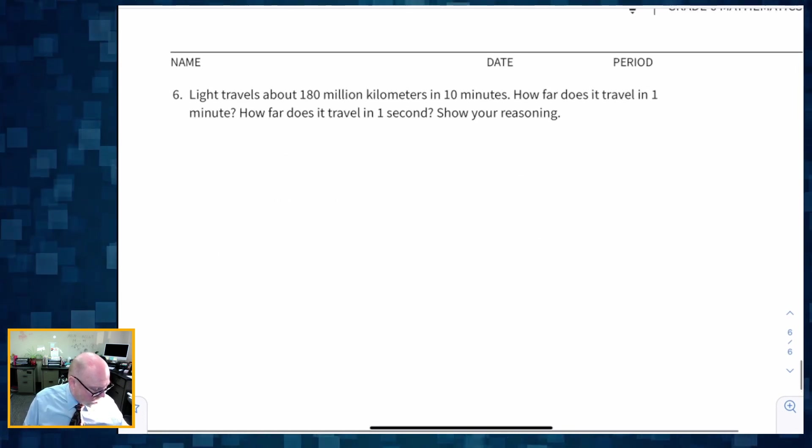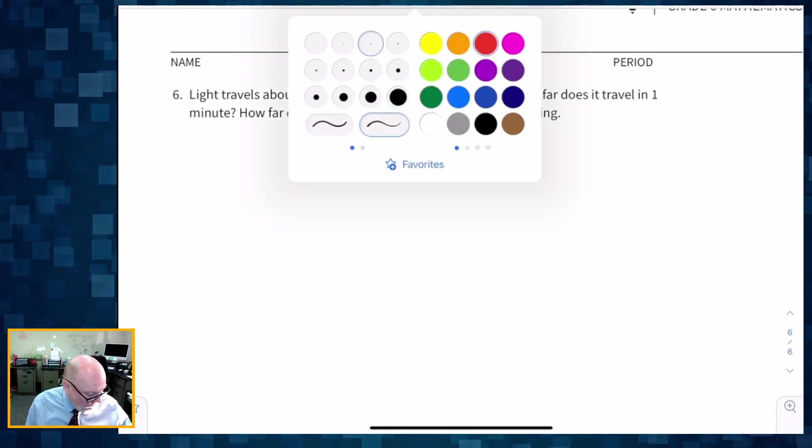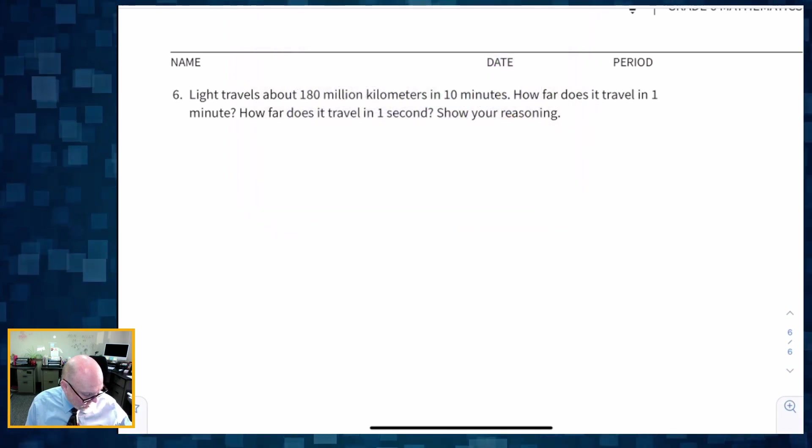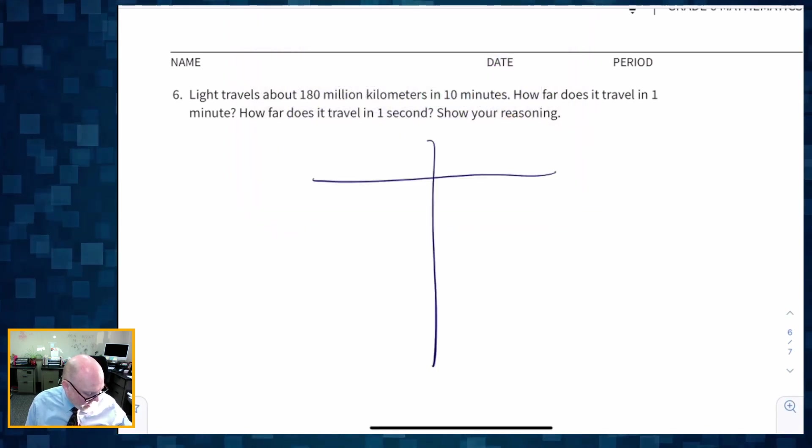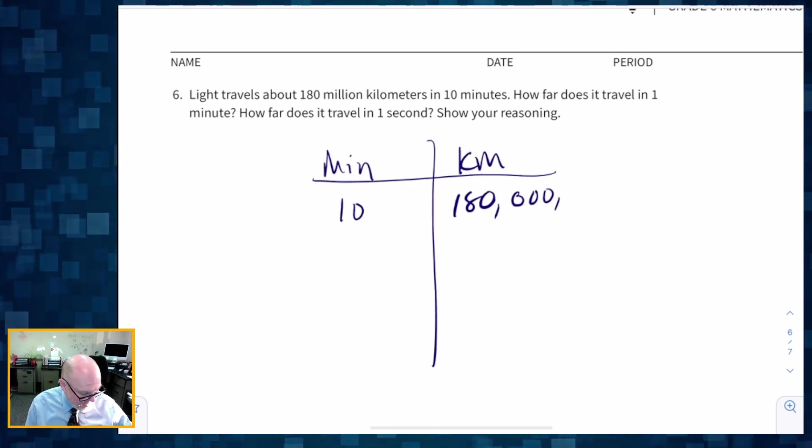And then our last question. Light travels about 180 million kilometers in 10 minutes. How far does it travel in 1 minute? Another table. I'm going to make a table, and I've got minutes, and I've got kilometers, and I'm going to put 10 minutes is 180 million. And I'm just going to spell it out all the way like that.